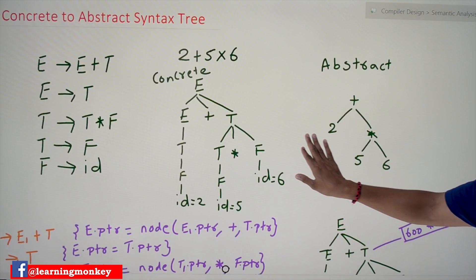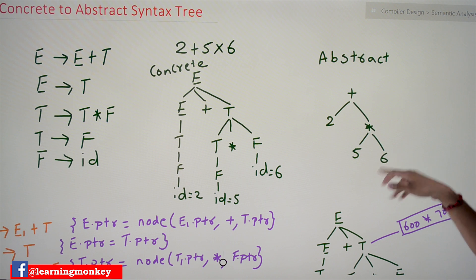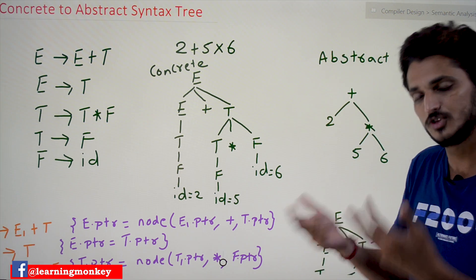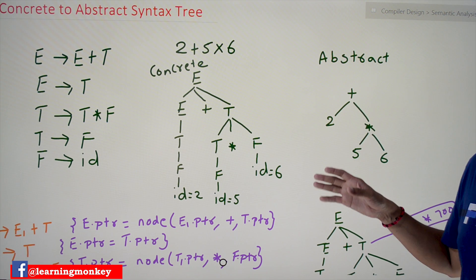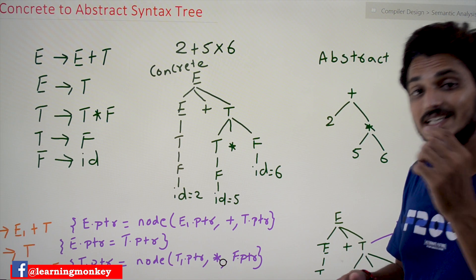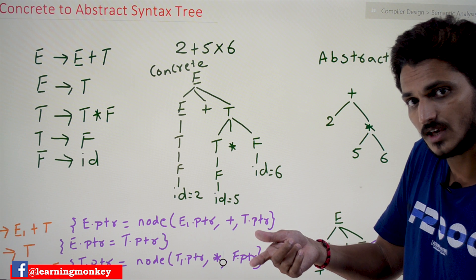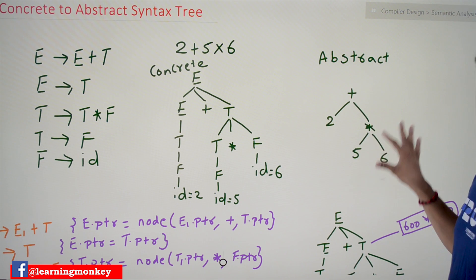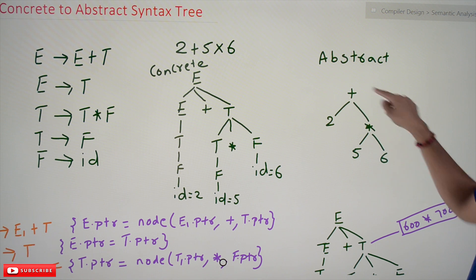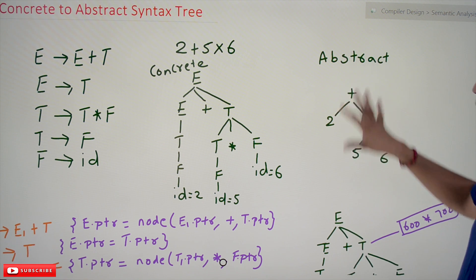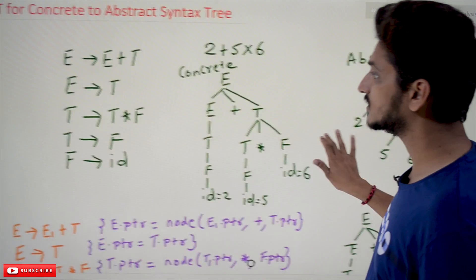The tree we are going to generate is an abstract syntax tree that looks like this: plus at the root, with 2 on the left and a star node on the right, with 5 and 6 as its children. This is a binary tree that must be constructed during the execution of the syntax analysis phase. From this tree we can easily understand that 5 multiplied by 6 must be done first, then its result is added to 2.